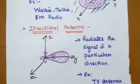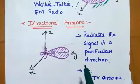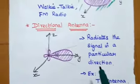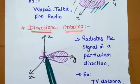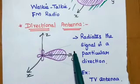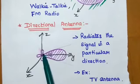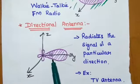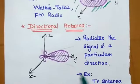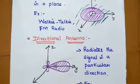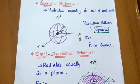Directional antenna radiates the signal in a particular direction with respect to the application. For example, a TV antenna — if you want to transmit in a certain direction, you can design a directional antenna pointing towards that particular direction. This is the radiation pattern for a directional antenna. These are examples of different radiation patterns. Thank you.